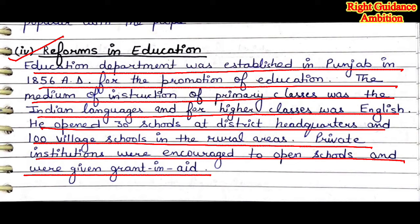Fourth point: Reforms in Education. An education department was established in Punjab in 1856 AD to promote education. The medium of instruction for primary classes (1 to 5) was Indian local languages, while for higher classes it was English. He opened 30 schools at district headquarters and 100 village schools in rural areas. Private institutions were encouraged to open schools, and the government provided them grant aid and loans.